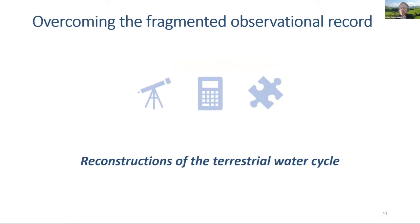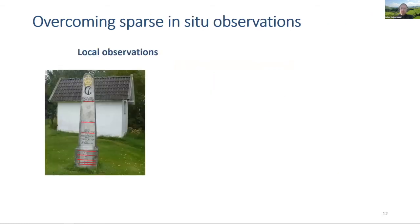We thought it would be crucial to overcome the fragmented observational record to tackle this and similar research questions. We've been working towards this using several approaches. The one I'd like to illustrate starts with the smallest dataset in my collection — a landmark raised on the occasion of the largest flood recorded in the region in the late 18th century, a truly rare and extreme event, especially considering the second largest flood only occurred about 200 years later.